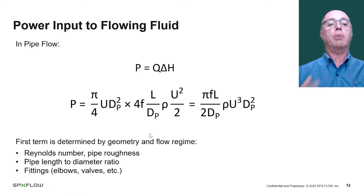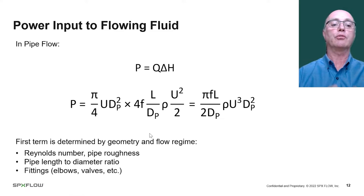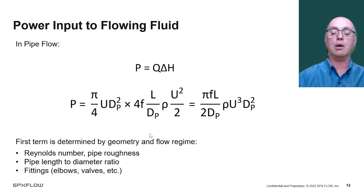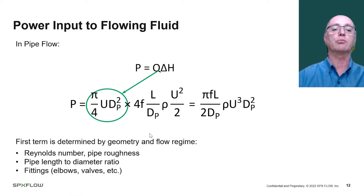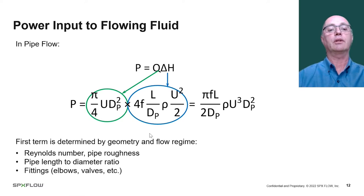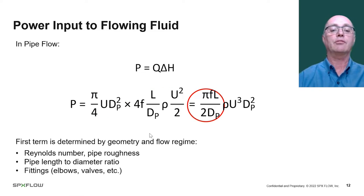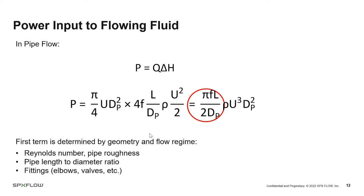Let's think about pumps. In pipe flow, the energy dissipated in the flowing fluid is equal to the flow rate multiplied by the pressure drop — I'm using H for pressure drop since P is used for power. If we express the flow rate and the head in terms of the velocity and the pipe diameter, and the head in terms of the velocity, pipe diameter, and length of the pipe, the friction factor comes in. The term circled in red at the front of the equation is determined by the geometry and the flow regime: Reynolds number and pipe roughness, the pipe length-to-diameter ratio L/D, and whether there are any fittings such as elbows, valves, or flow meters.